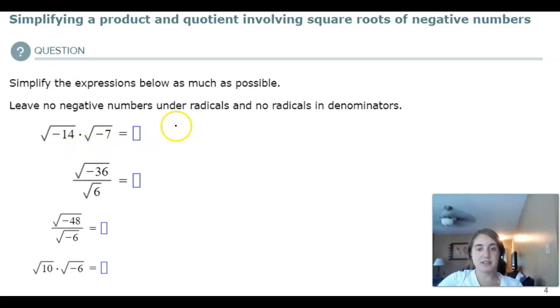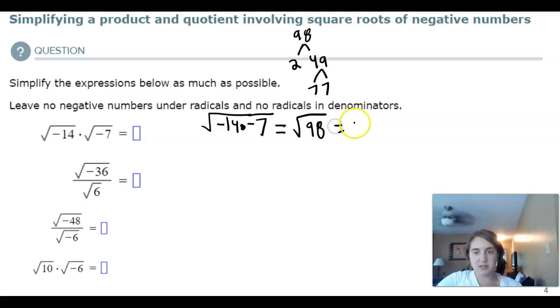We're going to continue to practice this idea. We know that we can multiply what's underneath radicals. So, 14 times 7, negative 14 times negative 7 is the square root of 98. We have 2 and 49, 7, 7, so 7 times 7 times 2.